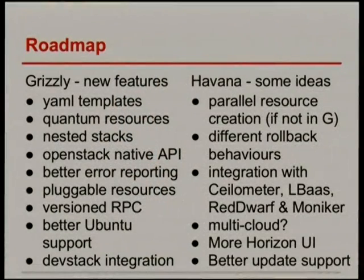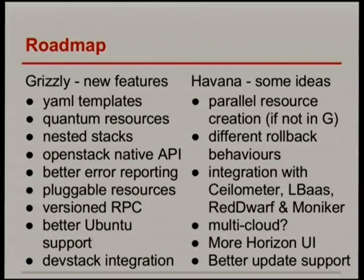In Grizzly there's been quite a heap of new features: YAML templates, Quantum resources, nested stacks, a native API, improved error reporting, pluggable resources so you can add your own resource type, a new version of RPC from work done in Oslo, better Ubuntu support, and proper DevStack integration.